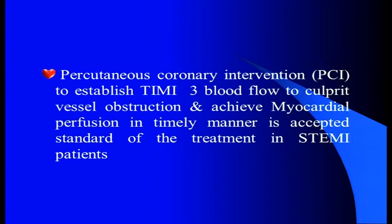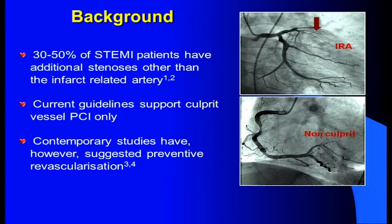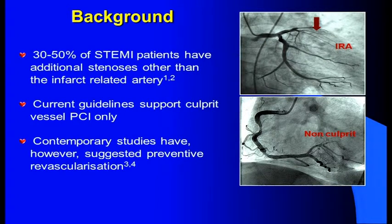Primary angioplasty is to establish TIMI 3 flow to the culprit vessel, to remove the culprit vessel obstruction, and to achieve myocardial perfusion in a timely manner — this is the accepted treatment of the STEMI patient all over the world. However, the important question we face is the angioplasty of the non-culprit vessel at the time of primary angioplasty. 30 to 50% of STEMI patients have additional stenosis other than the infarct-related artery.